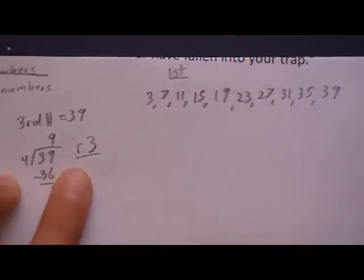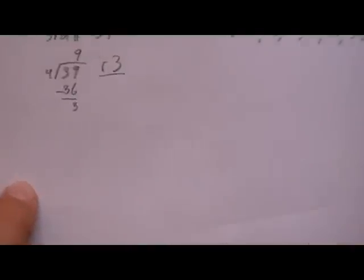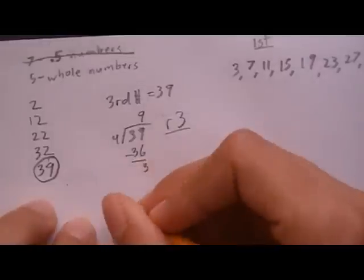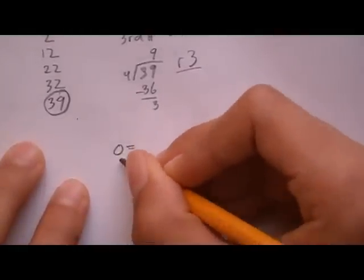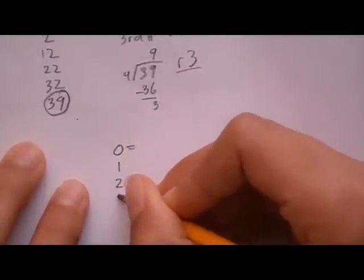So now to find the second possible numbers, you take your remainder and here's an important key to remember. Just always remember this. Whenever you divide by 4, you can end up with a remainder of 0, 1, 2, or 3.